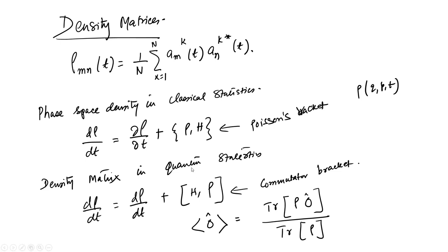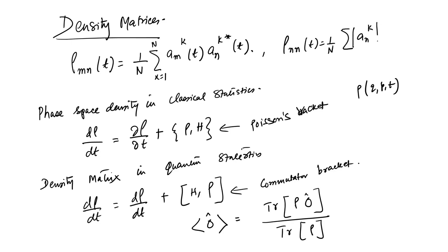We can also write the density matrix in a slightly different way. The diagonal elements are given by rho_nn = (1/N) * sum_{k=1}^{N} |a_nk|^2. Let us now list out a few properties of the density matrix.